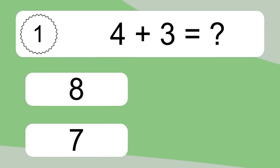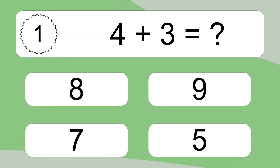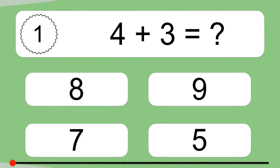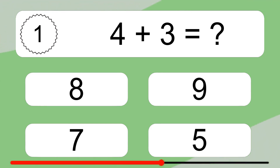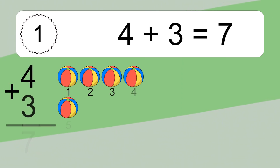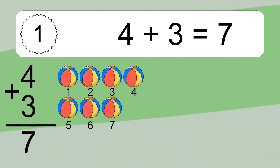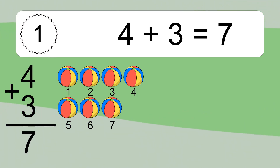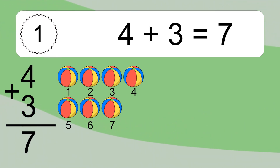4 plus 3 equals what? 4 plus 3 equals 7. Let's count it: 1, 2, 3, 4, 5, 6, 7.